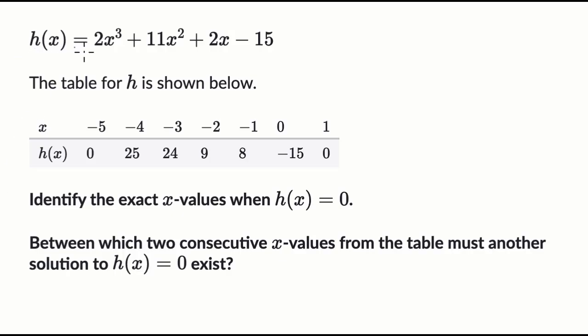We're told that h(x) equals 2x³ + 11x² + 2x - 15, and the table for h is shown below. They give us some x-values and the corresponding h values. So h(-5) = 0, h(-4) = 25, and so forth.